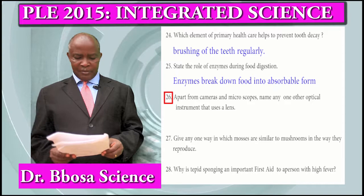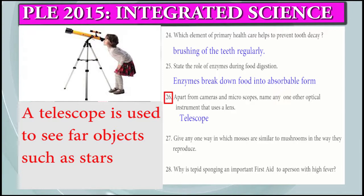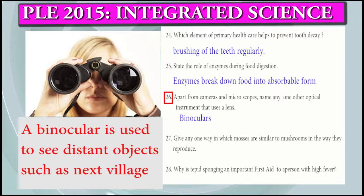Question 26: Apart from a camera and a microscope, name one other optical instrument that uses a lens. That is a telescope. A telescope is used to see distant objects as far as the stars. Binoculars are used to see distant objects nearer.